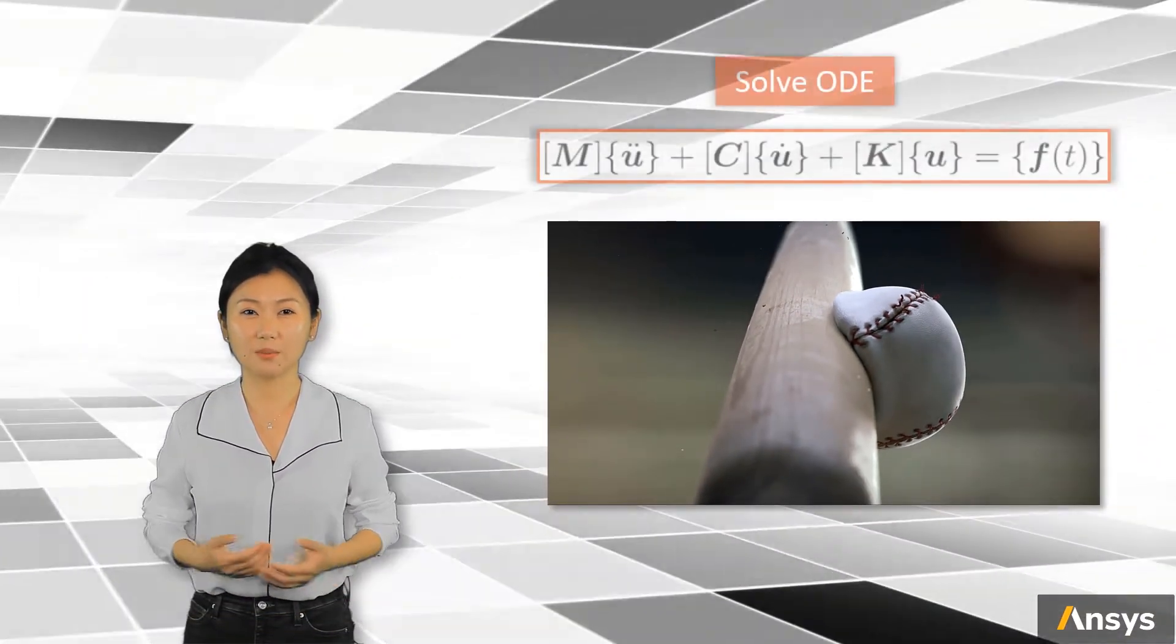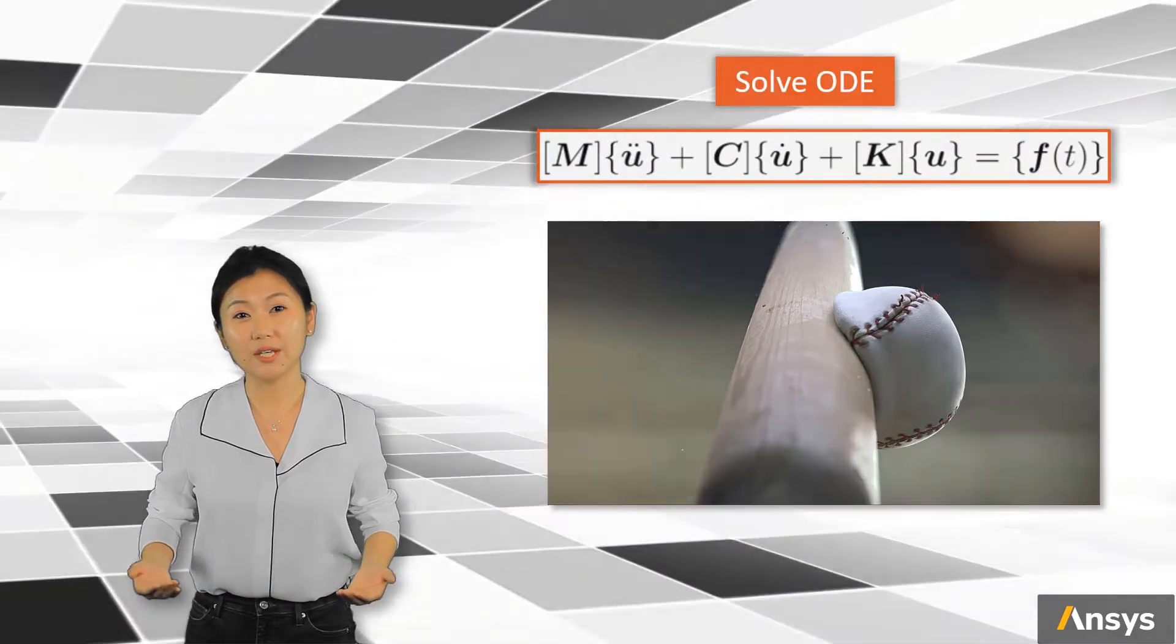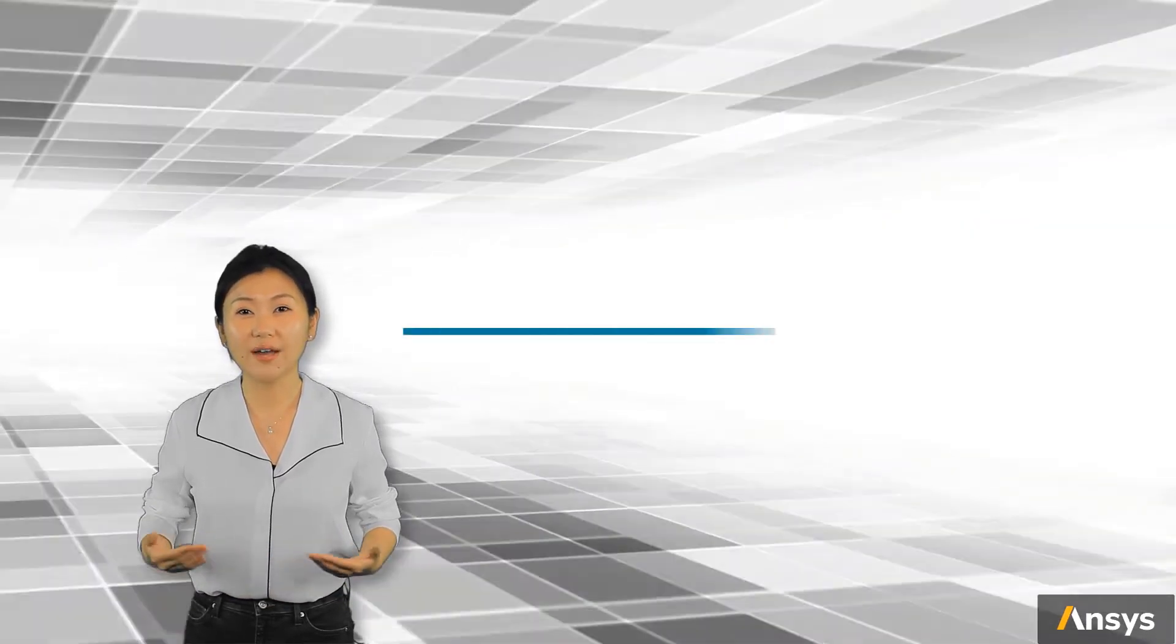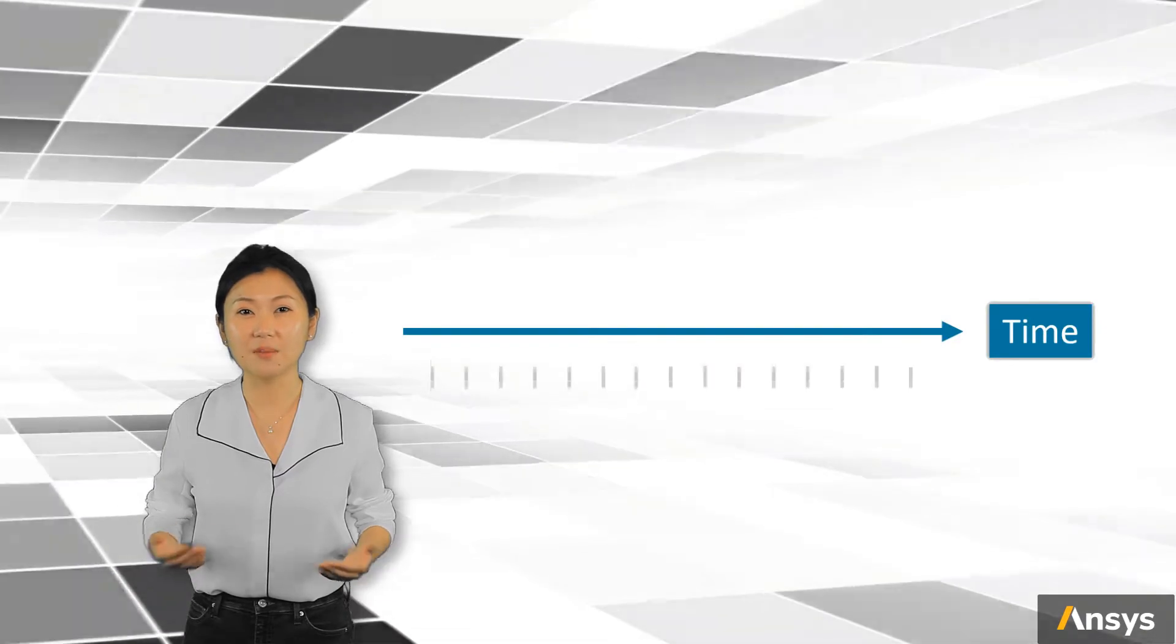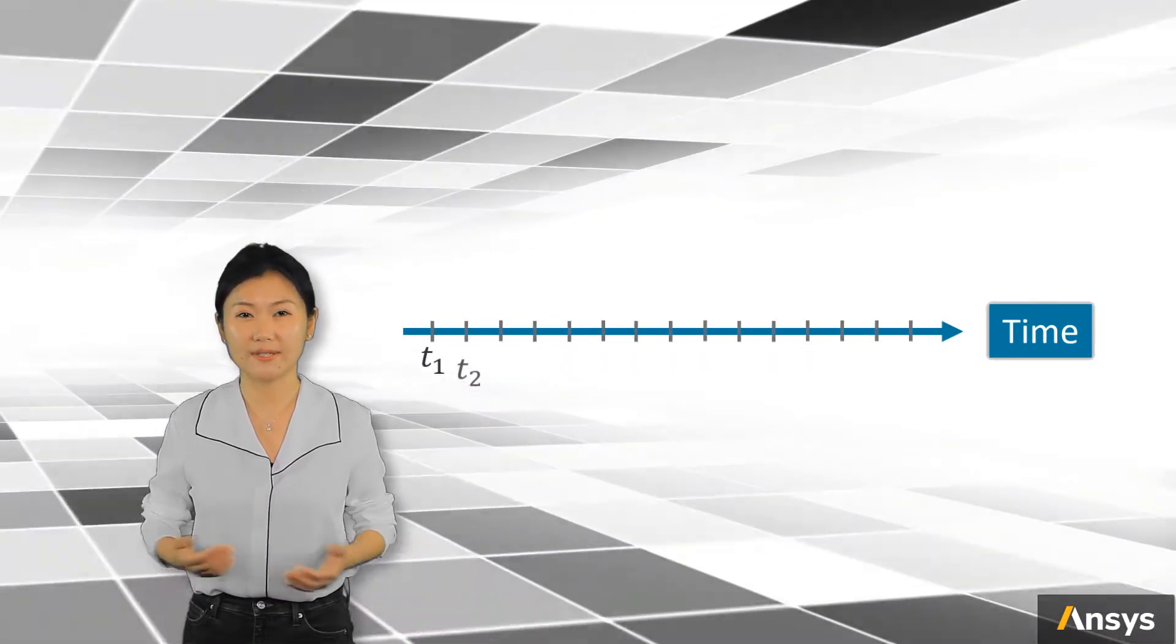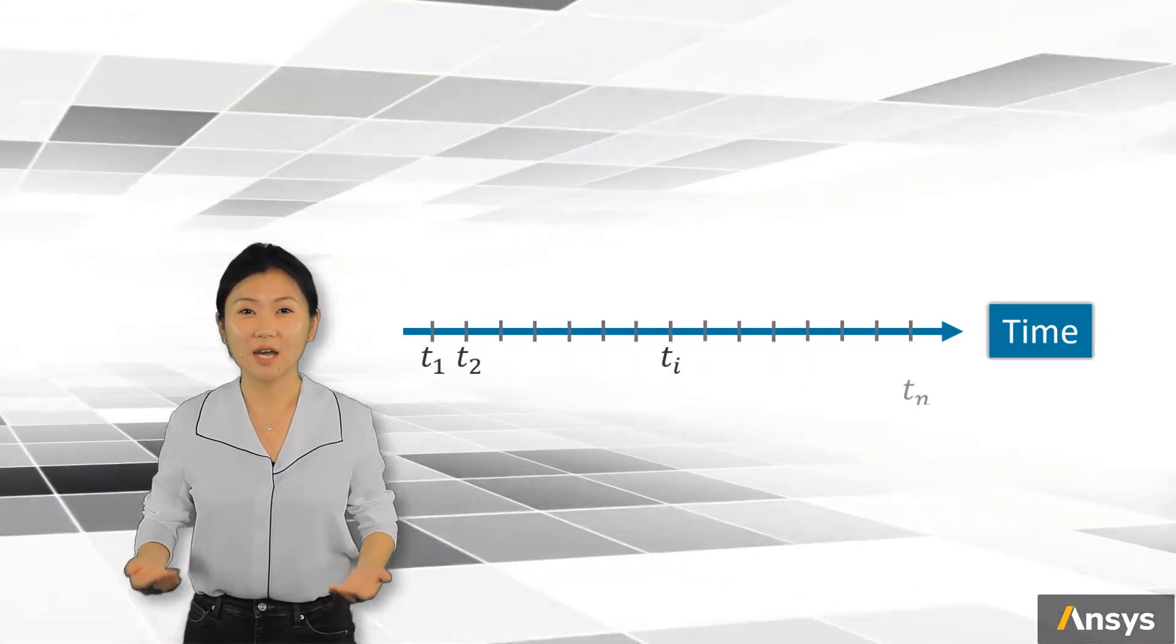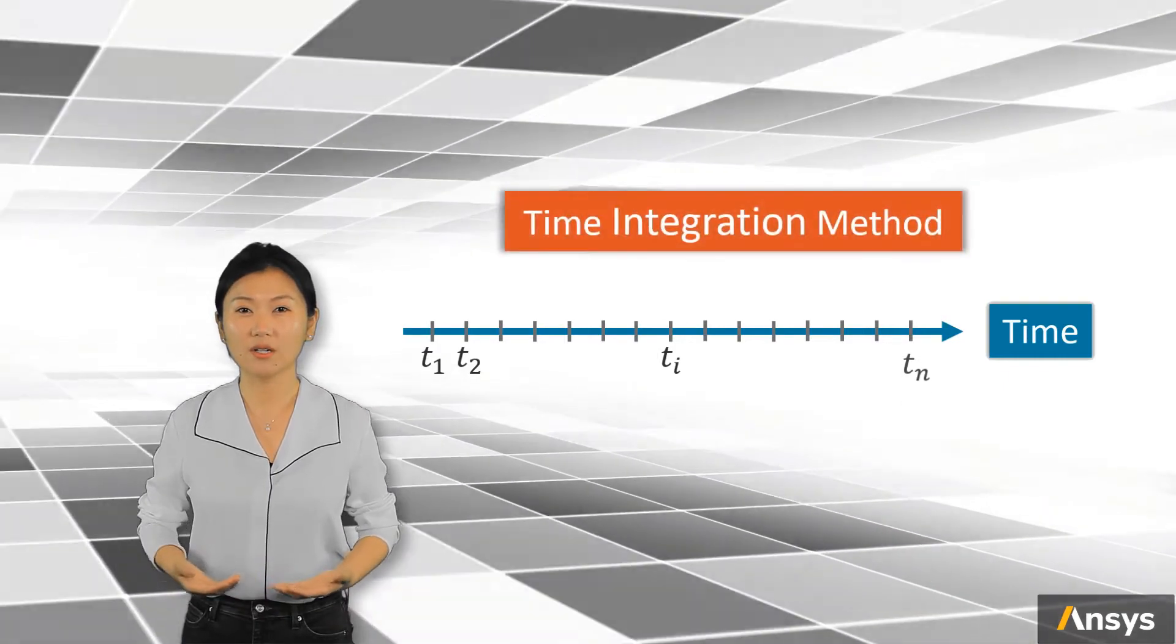So to solve such dynamic problems, or we can say solve the ODE, what we do is divide time into a finite number of time steps and solve the problem at these time points. We call this time integration method or time stepping.